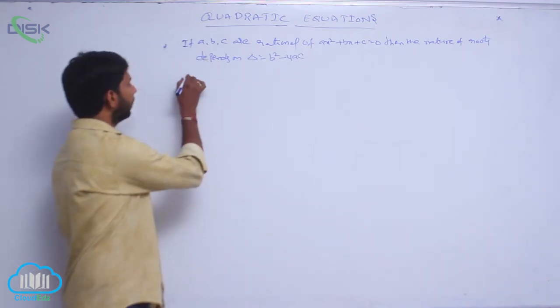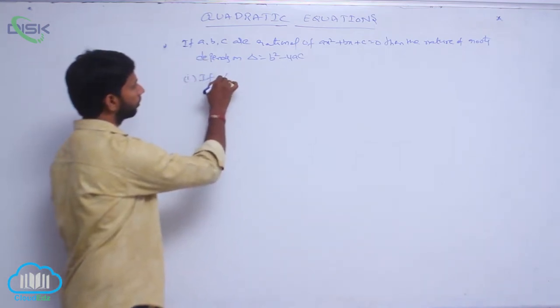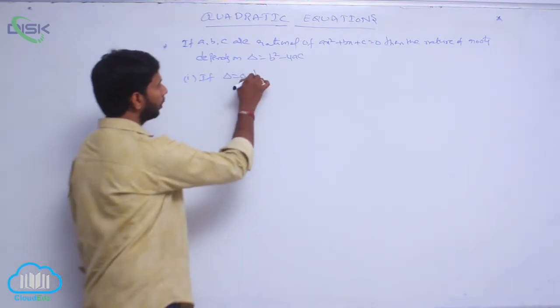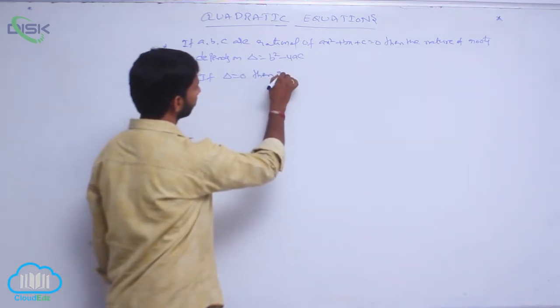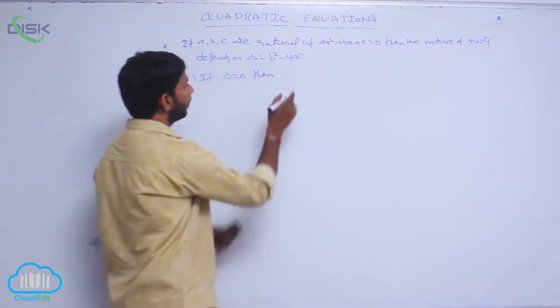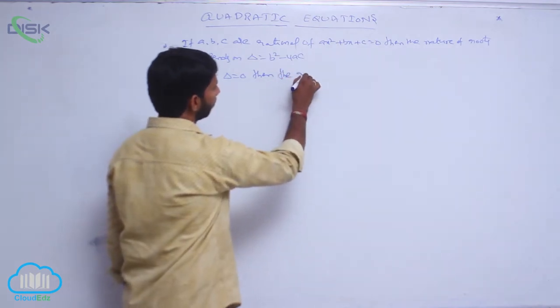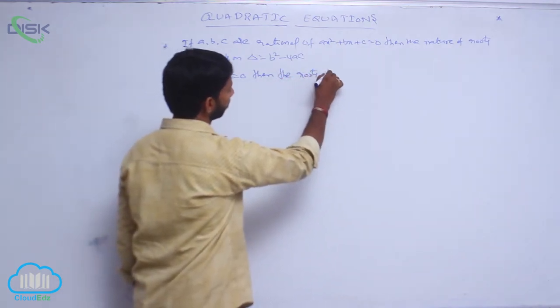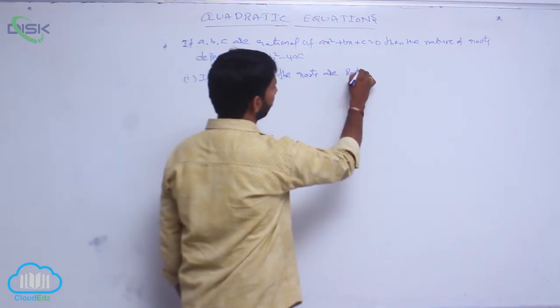Suppose if delta equals 0, then the roots are rational and equal.